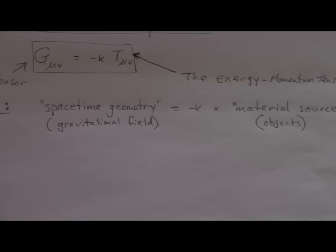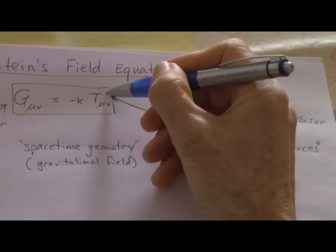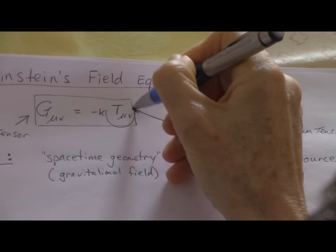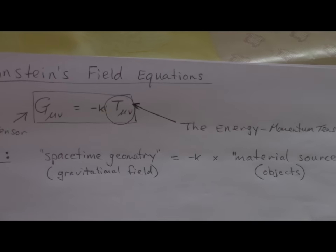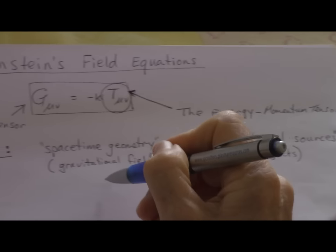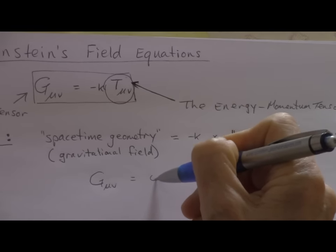Now, what Einstein does in the simplest case, he says, let's make all the material sources or the objects that cause the gravitational field. This is this part here. We'll set that to zero. And therefore we get an expression G_μν equals zero.